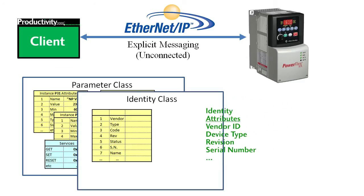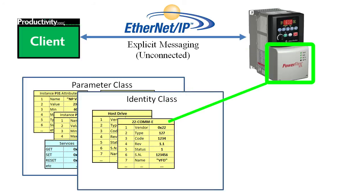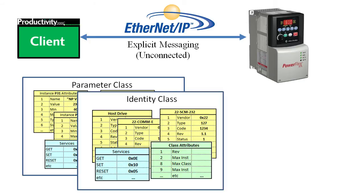Here's the predefined template of attributes for the Identity class. The vendor just fills in the blanks to create an instance for each object — here's the drive instance, here's the EtherNet/IP adapter instance, and you might have some other communications modules. The drive manufacturer will create one of these instances for every option available. Since they all use this standardized template along with a standard list of services and class attributes, anyone who wants to know about the identity of one of these objects knows how to get it.